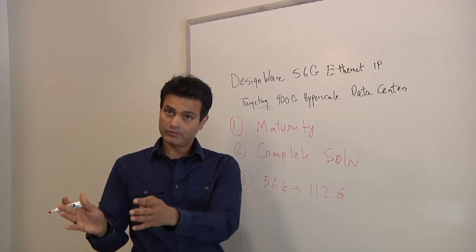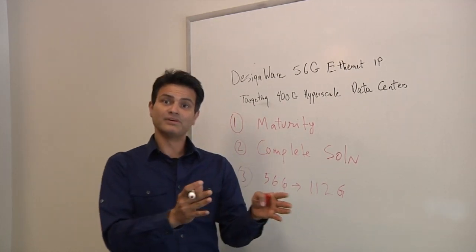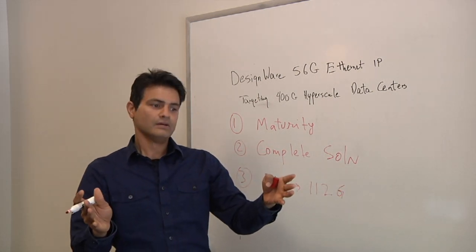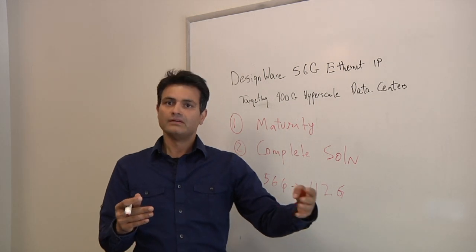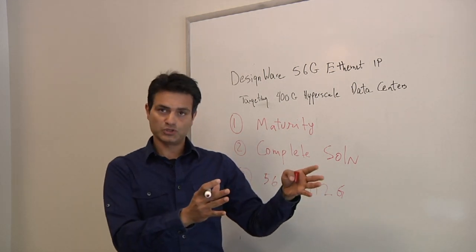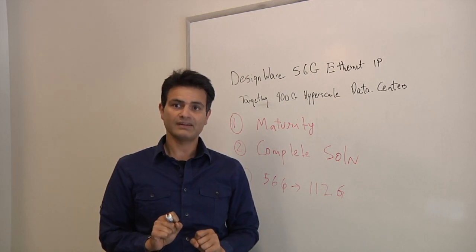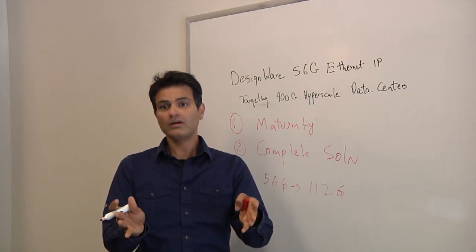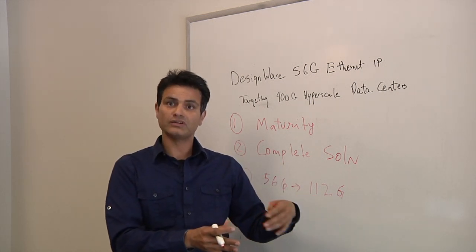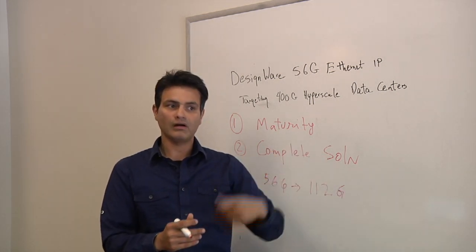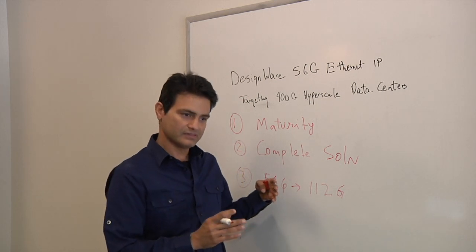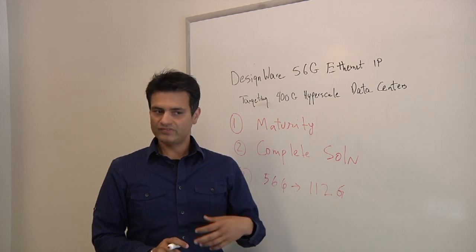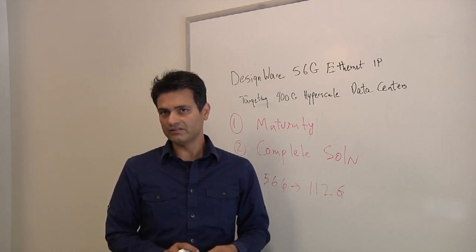And the way we have architected our 56 gig PHY is keeping in mind that we have to move to 112 gig. So going to 112 gig is not twice as difficult, but it's twice as many blocks. As an example, the DSP doubles. The number of ADCs are doubling. The LCOs change to quadrature LCOs so we can take four phases out of it. So it's double the number of blocks. But the architecture has a lot of differentiating features, including multi-loop clock recovery, that will take itself into the 112 gig very soon. And finally, I'd like to say all of these PHYs are now being done in very advanced FinFET technologies.